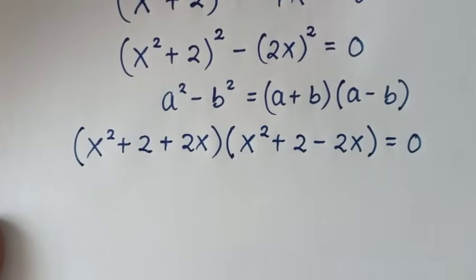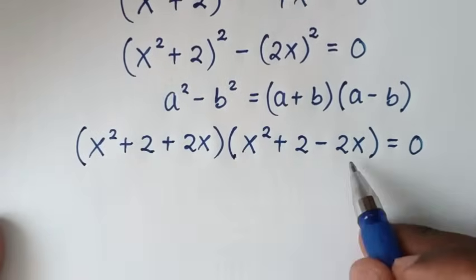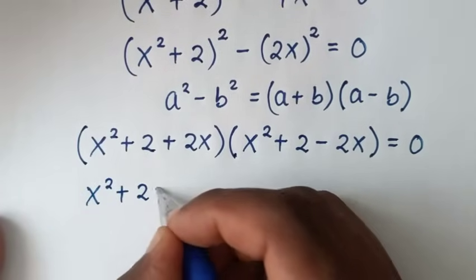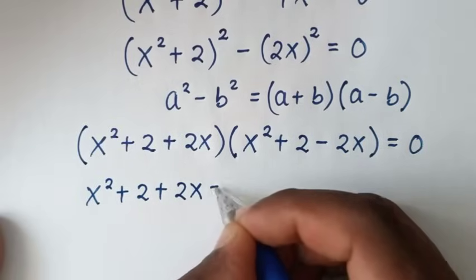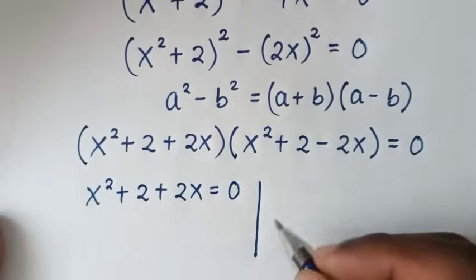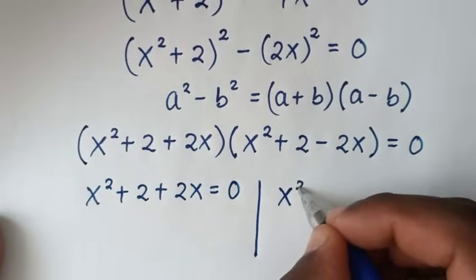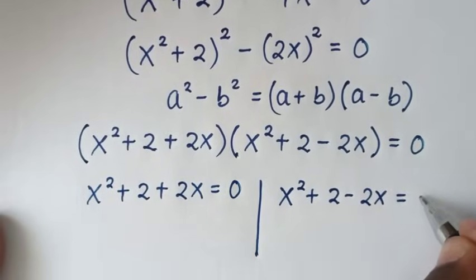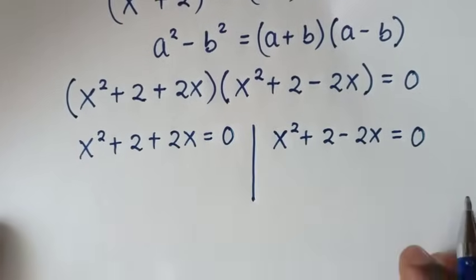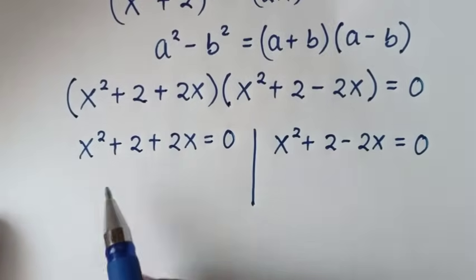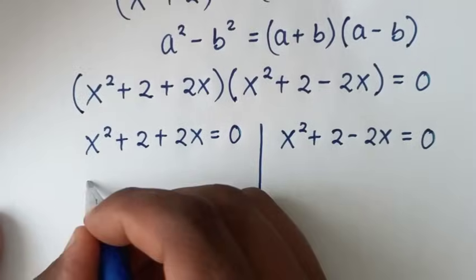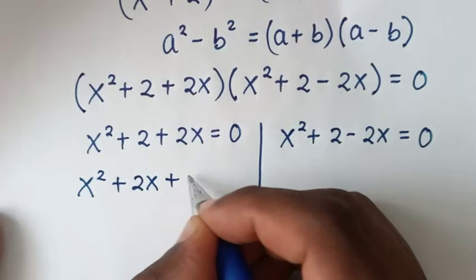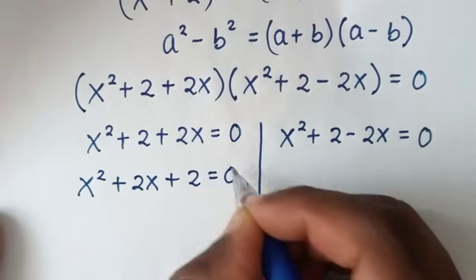Then in the next step, from here we have two solutions. This is the first solution, which is x² + 2 + 2x = 0. And this is the second solution: x² + 2 − 2x = 0. From the first solution, placing it in order, it will be x² + 2x + 2 = 0.